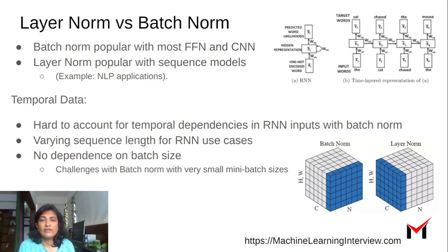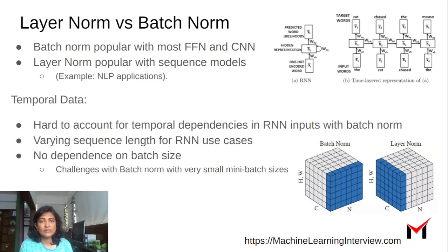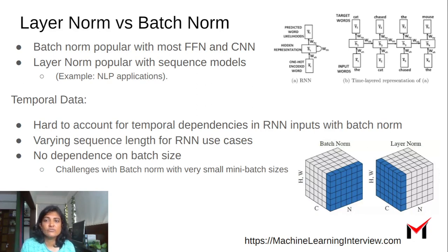Why do we have two different types of norms? Batch norm is very popularly used in CNNs and basic feed-forward networks. But if we look at more recent NLP-based applications which have used transformer-based models, it's more common to use layer norm.